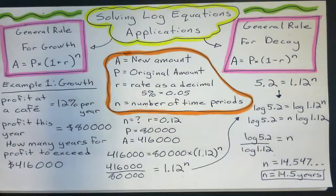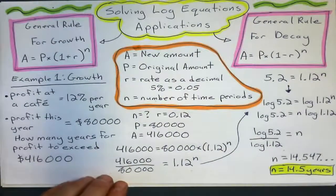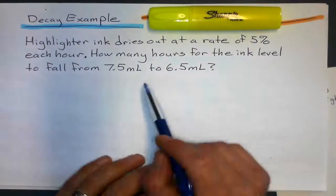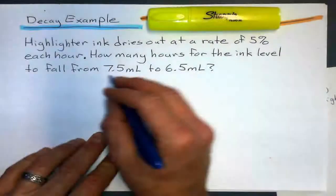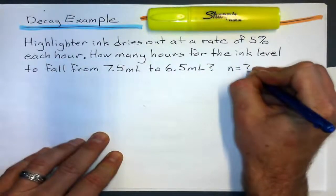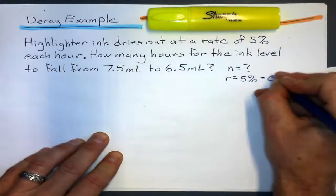14.54. So, a long time to make that profit of 416,000. Okay. So, we'll look at a decay problem now. Okay. So, I like this problem because there's not that much given, but it's actually pretty complex here. So, how many hours?